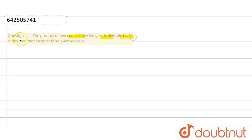integers is divisible by two. The statement is true, of course. So for that, two consecutive integers, let integers are n and n plus 1.